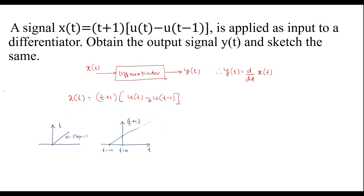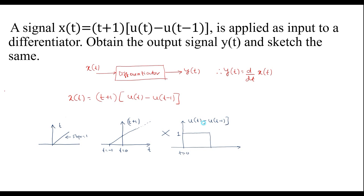I will draw u of t minus u of t minus 1. It is a step signal which begins at t equal to 0 and ends at t equal to 1, with amplitude equal to 1.